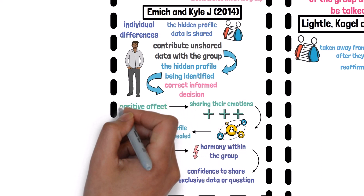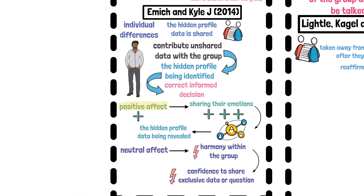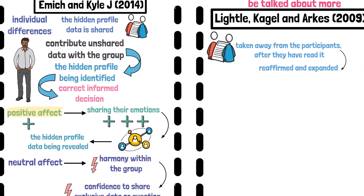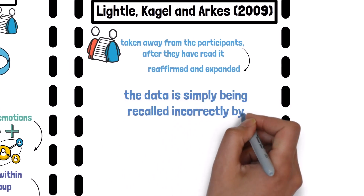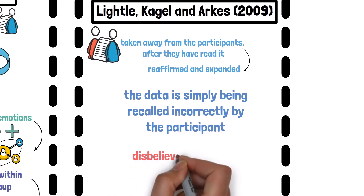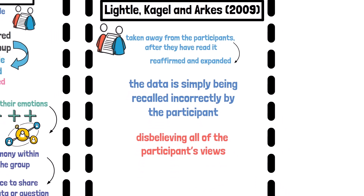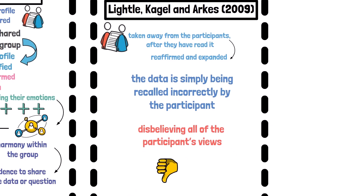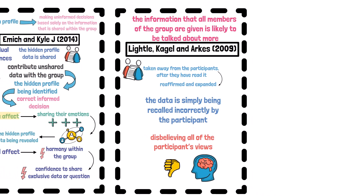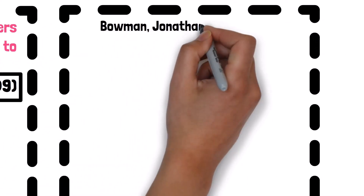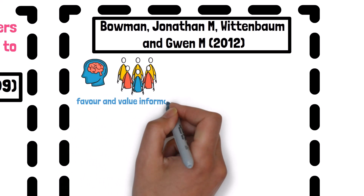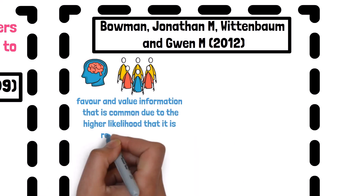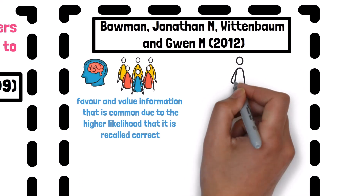This links to Emich and Kyle's theory of positive affect, as shared information is agreed with by the group. Likewise, those with hidden profile data may withhold their information when other group members do not agree with their thoughts, or — as in the Lightle, Kagel, and Arkes 2009 experiment — the group may believe the data is simply being recalled incorrectly. This may lead to further consequences of disbelieving all of a participant's views on the basis that the individual might have a faulty or inaccurate memory in the eyes of other group members. Similarly, Bowman, Wittenbaum, and colleagues in 2012 found that during memory tasks, groups favor and value common information due to the higher likelihood that it is recalled correctly, as opposed to data that only one member can remember.